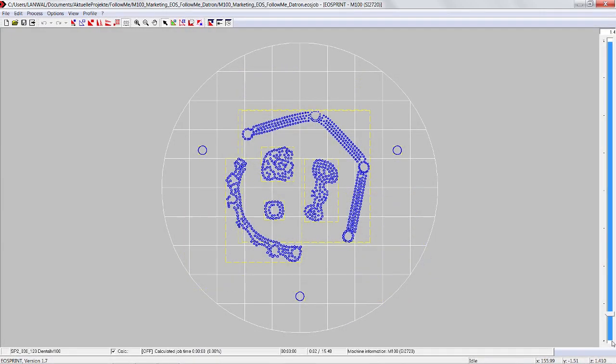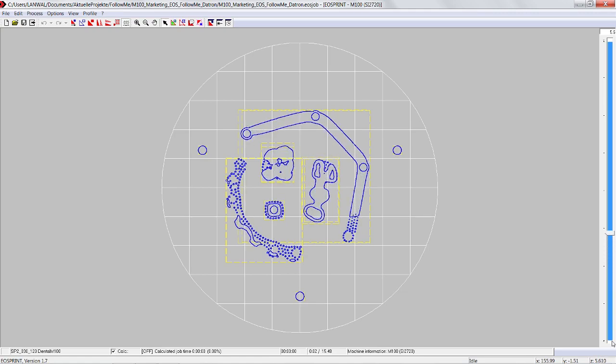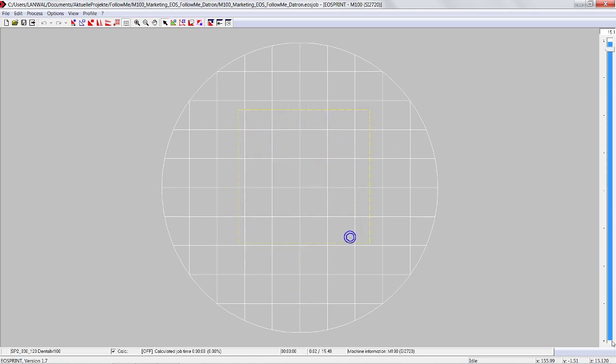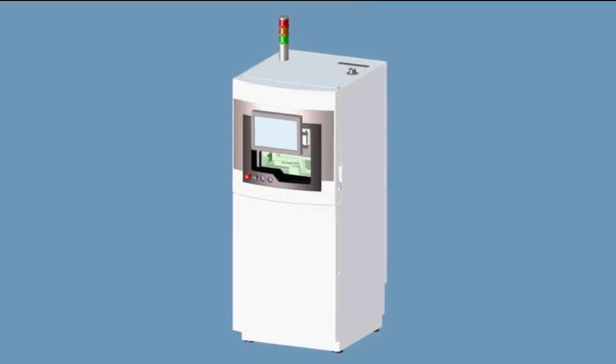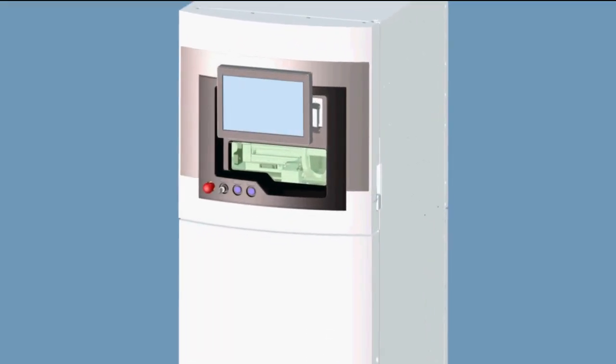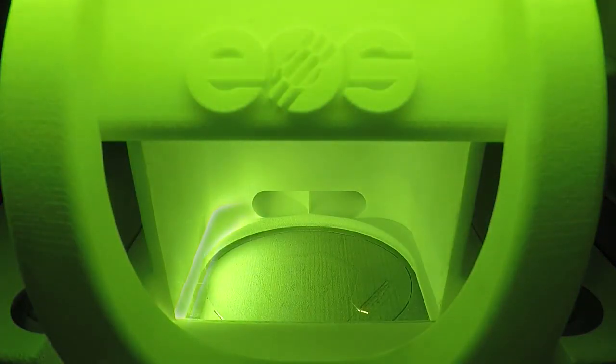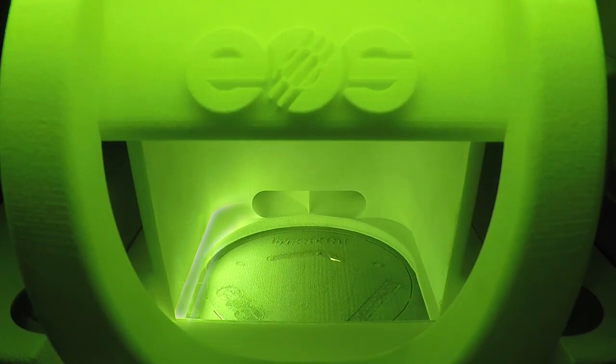The slice files are loading into EOS print and the building task is exported to the M100. The M100 is equipped with a 200 watt laser and a focus size of 40 micron. The certified process builds dental geometries in 20 micron layers. The building time for a full platform is around 4 hours, depending on the Z height and the exposed area.